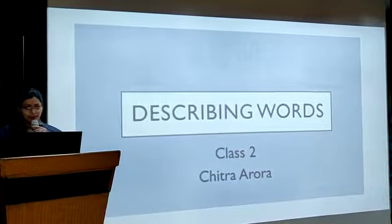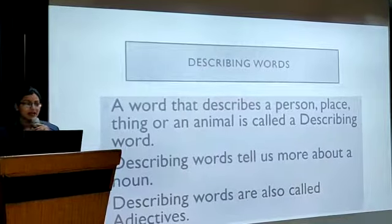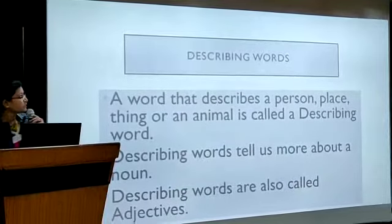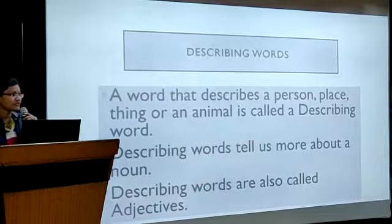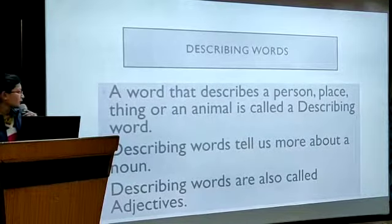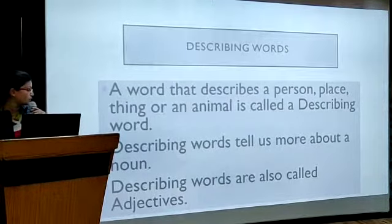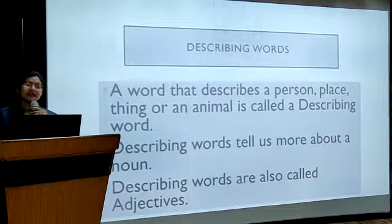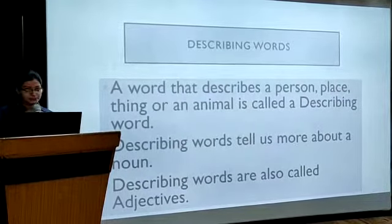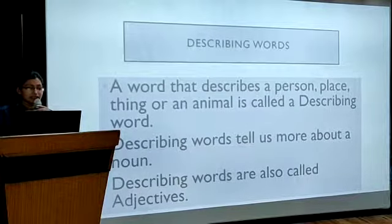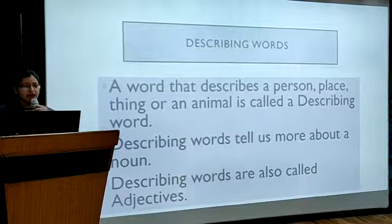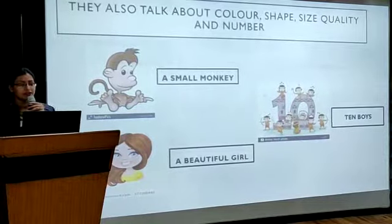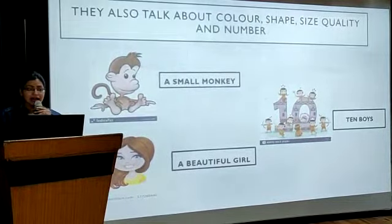Now let's discuss some more things about describing words. A word that describes a person, place, thing or an animal is called a describing word. And these words tell us more about a noun. Describing words are also called adjectives. And children, other than the qualities, they also talk about colour, shape, size and number.